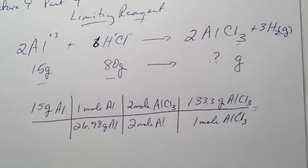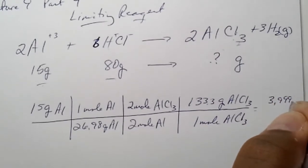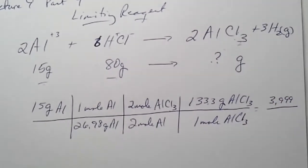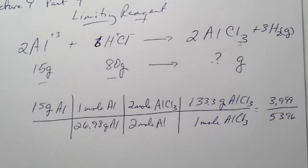And so, we did that math. That's fifteen times one times one times two times one thirty-three point three-three. That's three nine-nine-nine divided by twenty-six point nine-eight times two times one is fifty-three point nine-six.